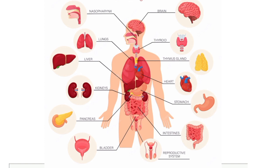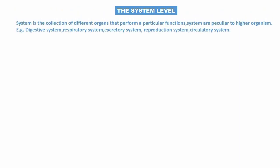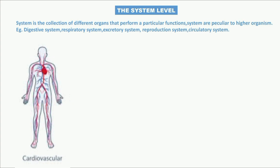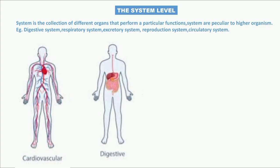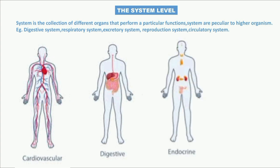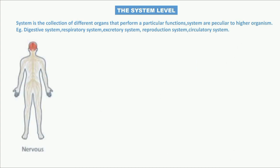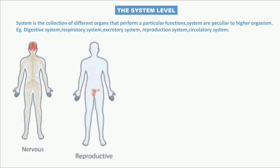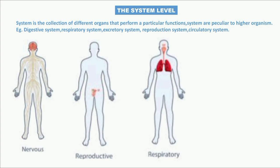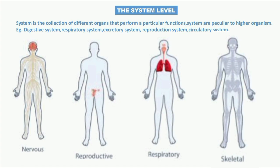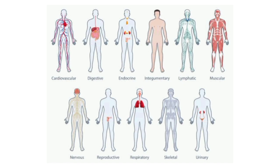The system level is a collection of different organs that perform functions together. Examples of systems include the cardiovascular system, digestive system (how food is digested), endocrine system (which sends signals in the body), muscular system, neural system, reproductive system, respiratory system (inhalation and exhalation), and skeletal system. These are the main examples of systems in the body.